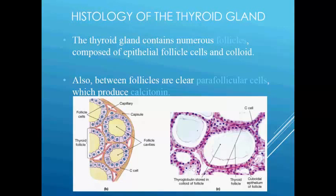Septa contains nerves, capillaries, blood vessels, and lymphatics. As you can see, these are the capillaries present in the septa that divides the gland into many lobules.